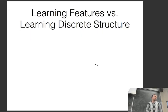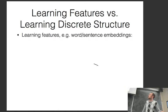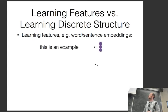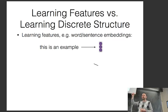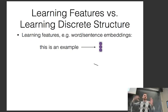Before proceeding, I want to make a distinction: learning features versus learning discrete structure. Up until now we've talked about learning features like word or sentence embeddings — turning a sentence into a vector. Methods like word2vec are unsupervised; we don't have annotations of the vectors. We don't really care about the vectors themselves — they're useful for some downstream task.